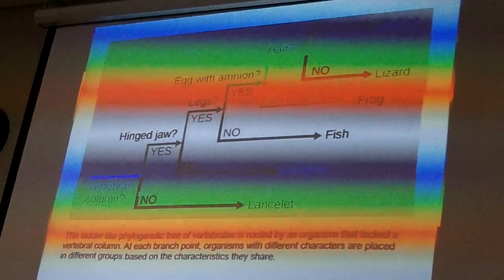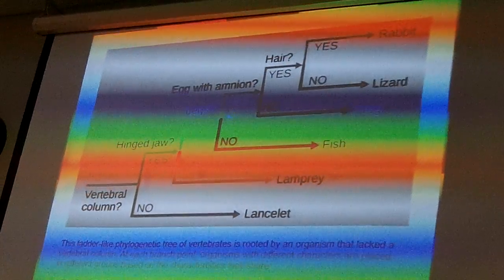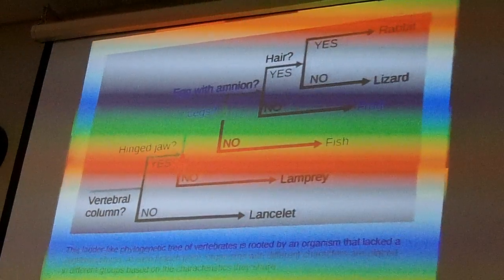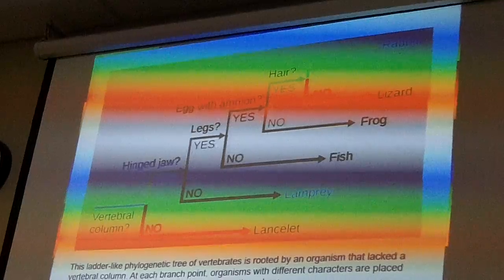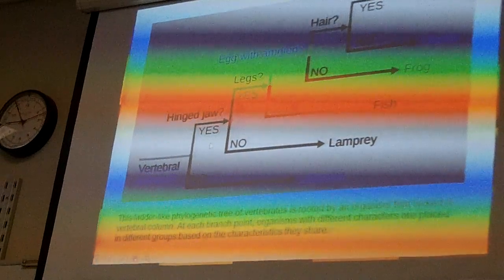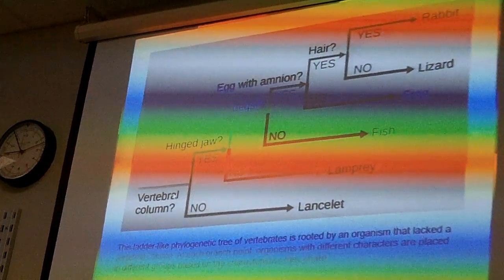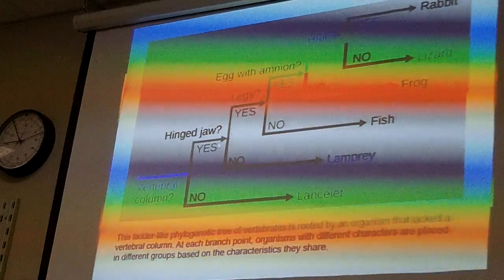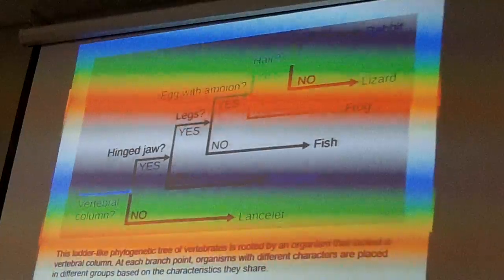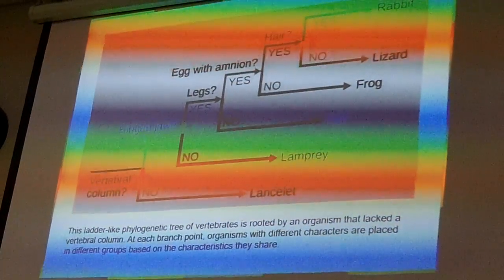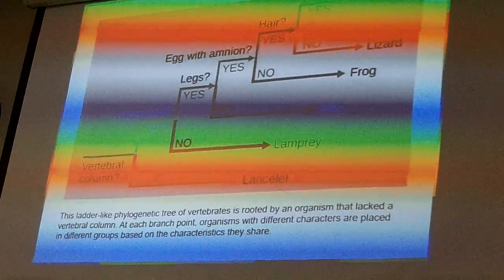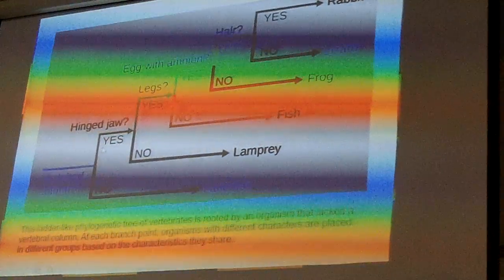This is a ladder-like evolutionary tree called a cladogram. A cladogram shows how evolution works — not by time, but by the evolution of shared-derived characters. These characters are traits like a vertebral column. Lancelets don't have it, but everything else following the green line does.